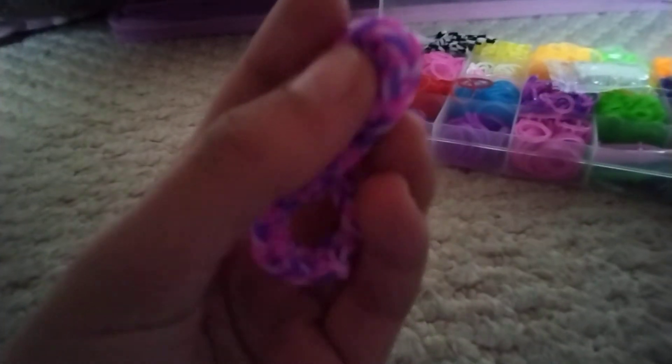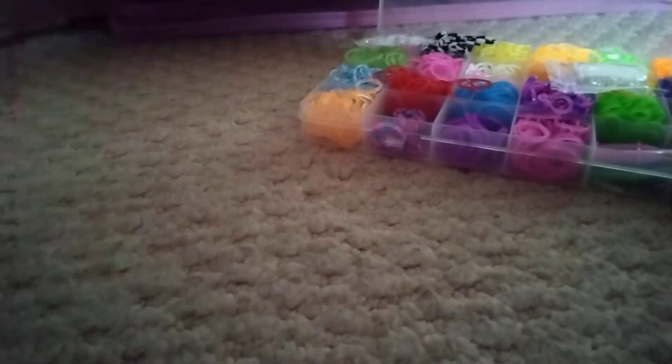I'm showing you how to make a loom band fishtail bracelet. So you grab your first color and you put it on one of your fingers. It doesn't matter which finger. And then you twist it round and put it on your other finger. Like this.